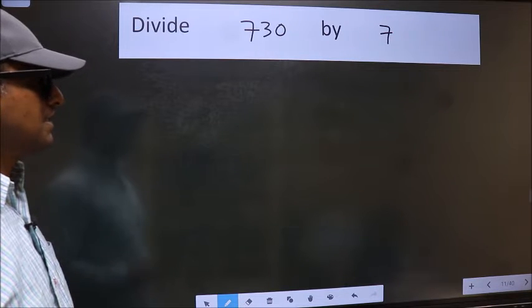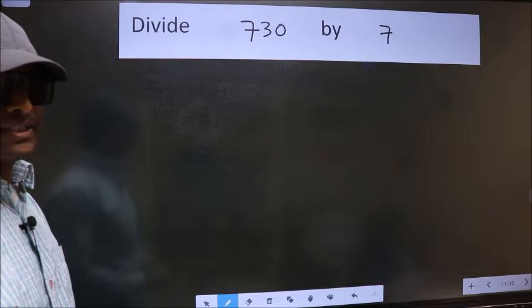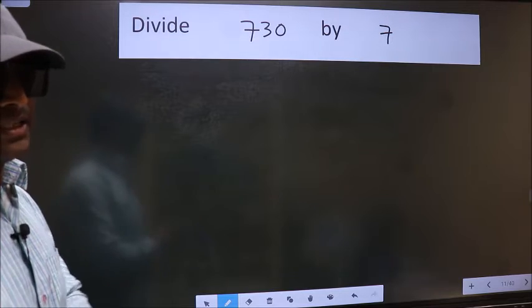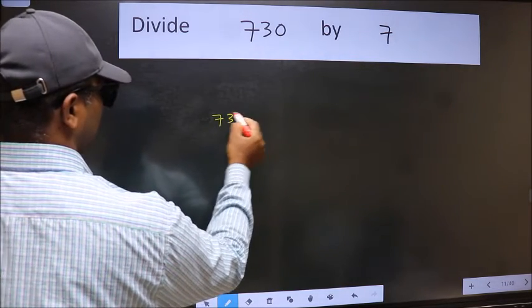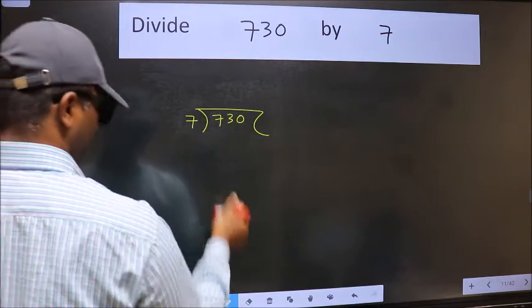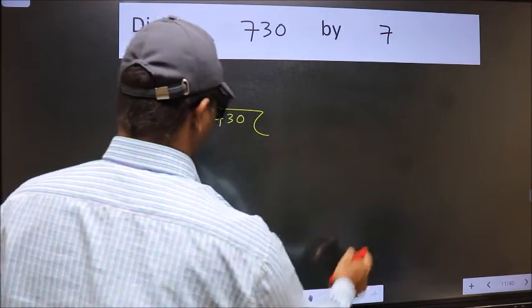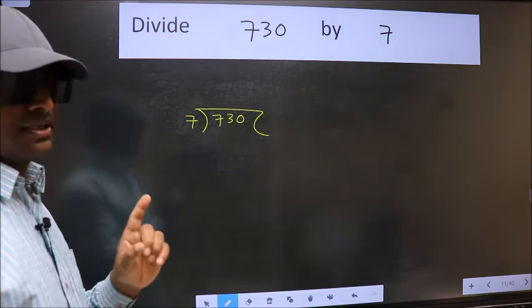Divide 7.30 by 7. To do this division we should frame it in this way: 7.30 here and 7 here. This is your step 1.